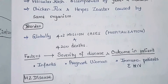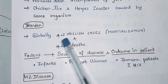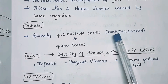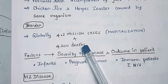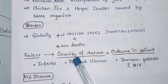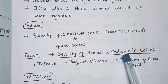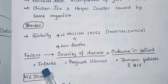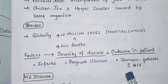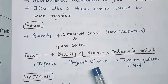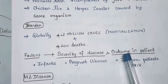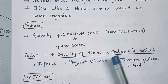The burden of chickenpox: globally 4.2 million cases have been hospitalized due to chickenpox and 4,200 deaths have occurred. Factors which determine severity of disease and outcome include mainly infants, pregnant women, and immunocompromised patients, which includes mainly HIV. These are the factors which lead to greater severity and worse outcomes.